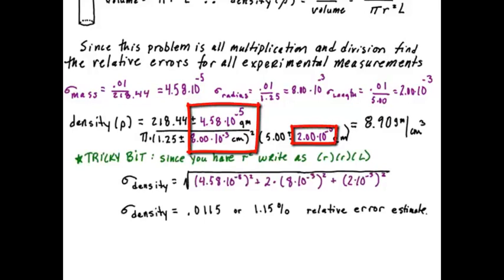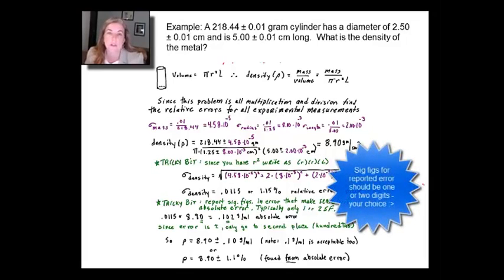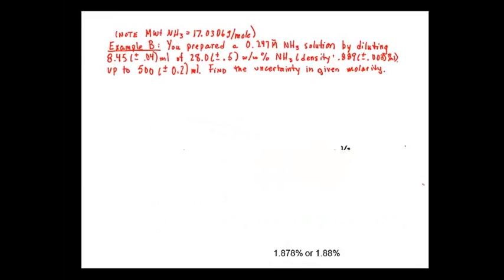So, one thing you need to know is since you had an r squared, you're going to write it as r times r times L, which means you have to count the error on r two times. And when you do that, you're going to get a density error of about 0.0115 or 1.15% relative error. Now, what's interesting about this is in this case, all of our relative errors were about the same. So, we couldn't really neglect any of them. They all contributed to the overall error in the density, which I reported out to be 0.102 in absolute numbers. So, I would report 8.90 plus or minus 0.10 or 8.90 plus or minus 1.1%.